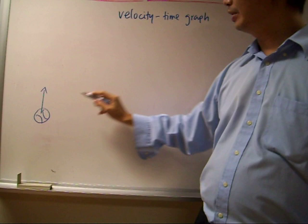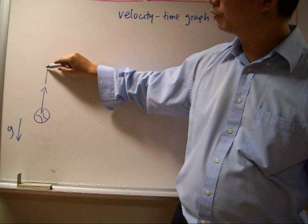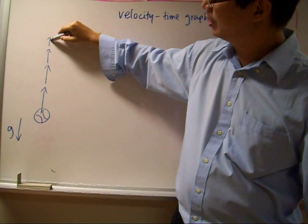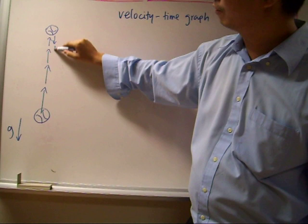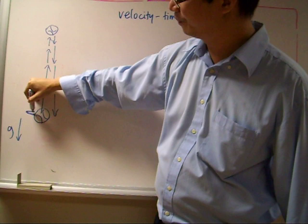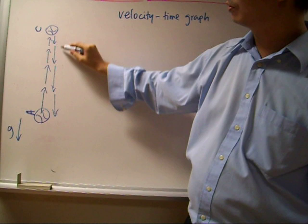So as the ball goes up, of course it will go slower and slower and slower. Eventually at the highest position, the ball is actually stationary for that instant. And when the ball is coming down, it goes faster and faster and faster.